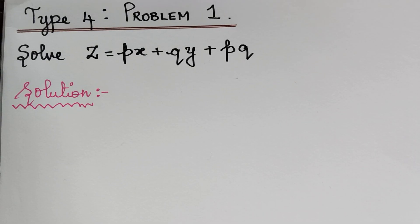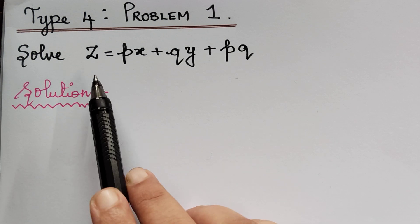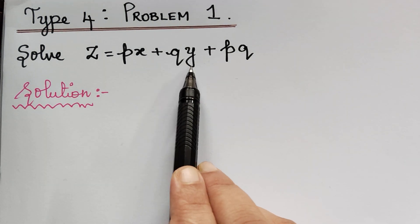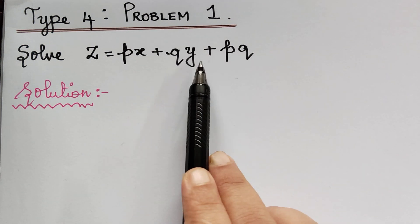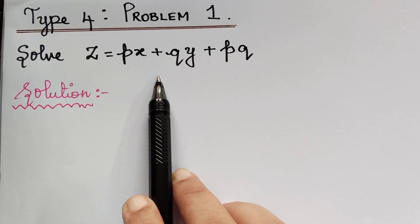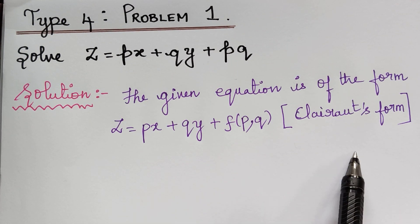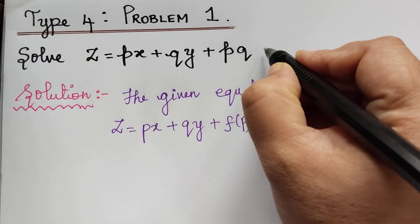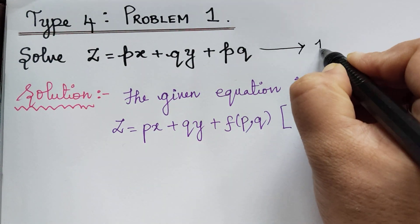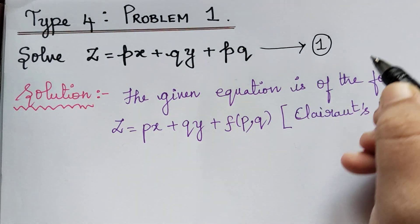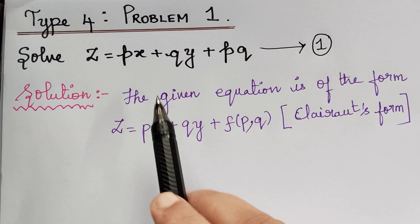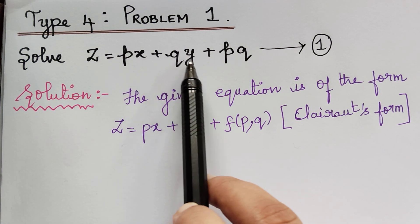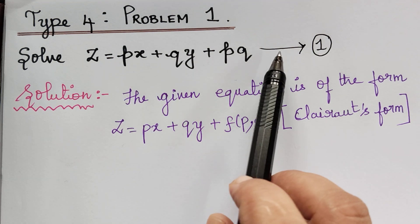Here we have the first problem under Type 4. We can see that z = px + qy + pq, which is of Clairaut's form. Let us mark the given equation as equation 1. First we have to find the complete integral, for which we have to put p equal to a and q equal to b in equation 1.